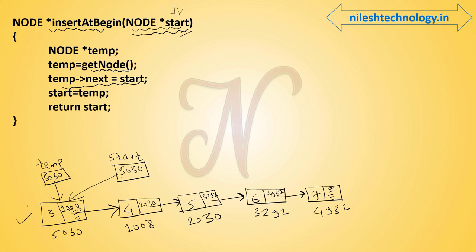We return this new linked list with return start. The output is now 3, 4, 5, 6, 7 — the new node with value 3 has been successfully inserted at the beginning.